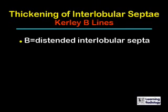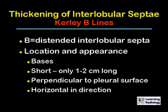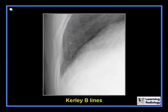Curly B lines are distended interlobular septi. They are usually found at the bases. They are short lines, only about one or two centimeters in length. They are perpendicular to the pleural surface and they frequently touch the pleural surface; therefore, they're horizontal in direction. These are curly B lines — you see they are short white lines, perpendicular to the lateral chest wall and the pleural surface, and they are at the lung base.